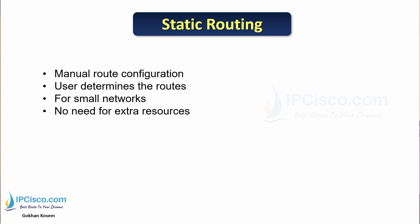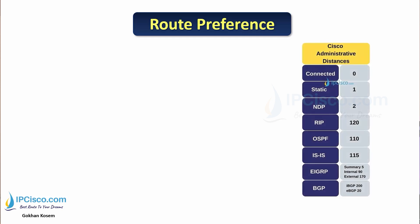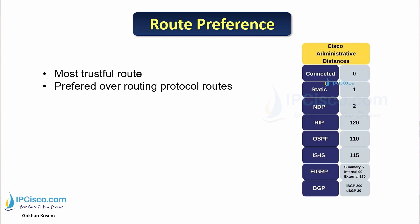There is no need for extra resources for static routing — you need only your own resource: your brain. Here are route preferences and administrative distance values. As you can see on the screen, all the Cisco default values are listed. Connected is zero and the static route administrative distance is one. Static route is the most trustful route.